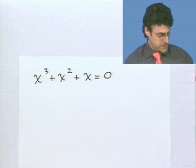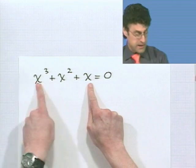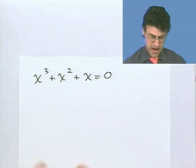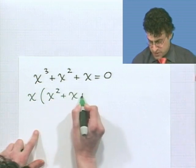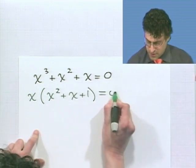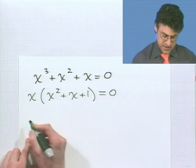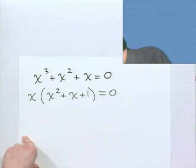x cubed plus x squared plus x equals 0. Now, let's take a look at that. Now, first of all, you'll notice that there's a common factor of x everywhere. So, I can factor out the x. So, that's going to be nice. So, it's x times x squared plus x plus 1 equals 0. And now, I want to try to factor this.